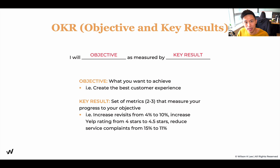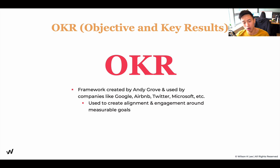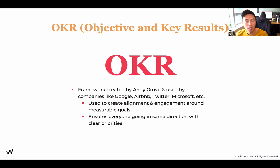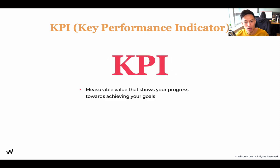If this doesn't make sense right now, it's okay, because we're going to go through examples and it will become more and more clear. OKR is not a concept I coined — it was coined by Andy Grove and is used by companies like Google, Airbnb, Twitter, and Microsoft. It creates alignment and engagement within your team, allowing everyone to roll in sync to achieve one objective. Next up is KPI — Key Performance Indicator: measurable values that show your progress towards achieving your goal, like bite-sized smart goals that show whether you're working closer to your objective.